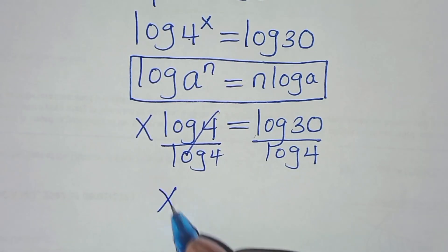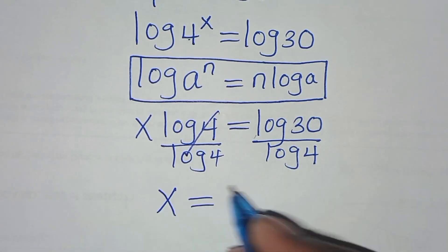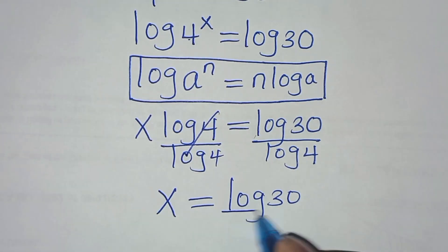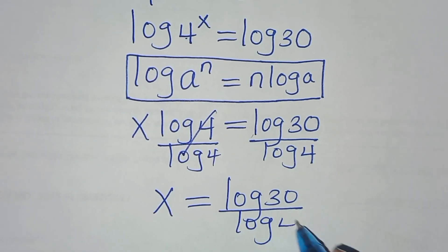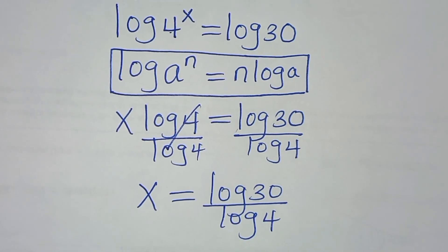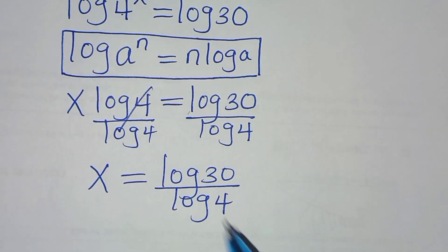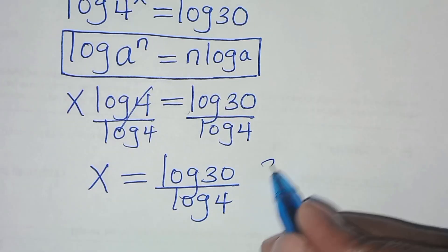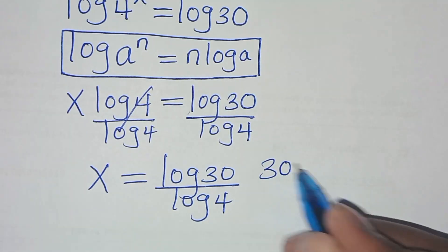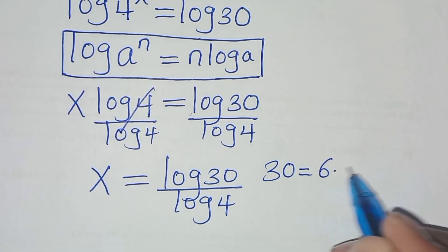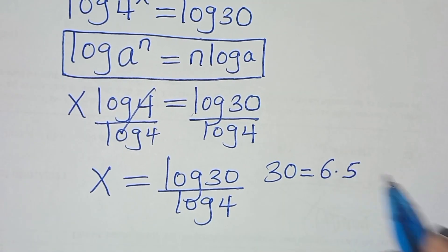Let's divide both sides by log 4 and simplify, so that x equals log 30 divided by log 4. The next step is that we can express 30 as 6 times 5.